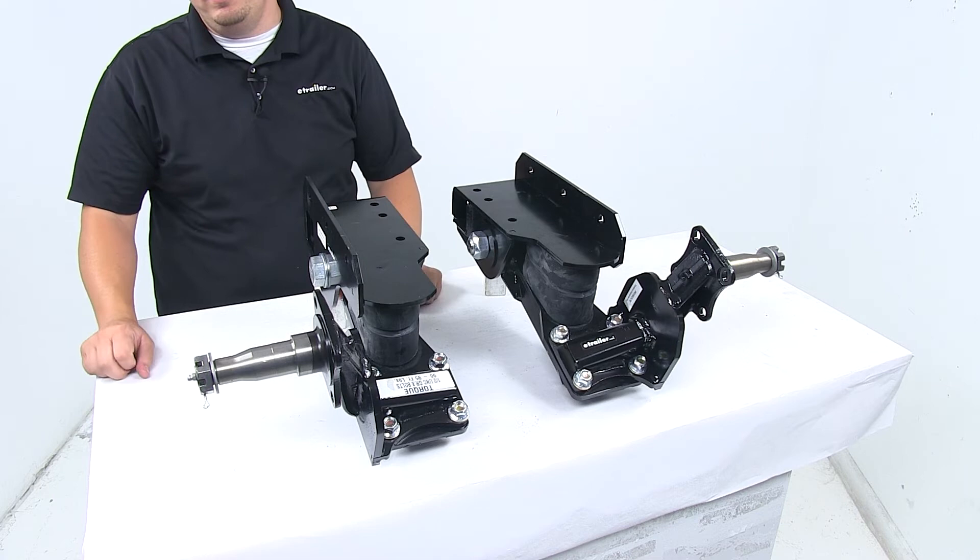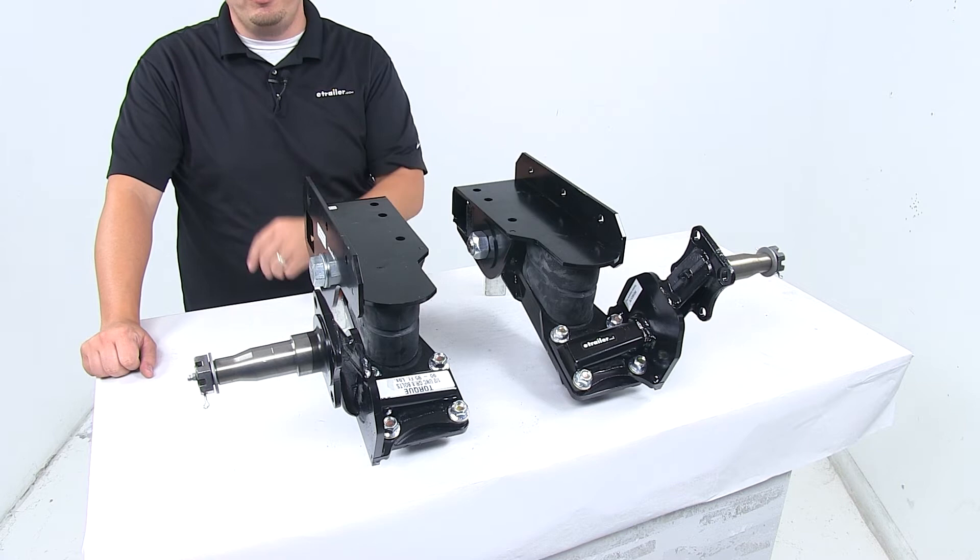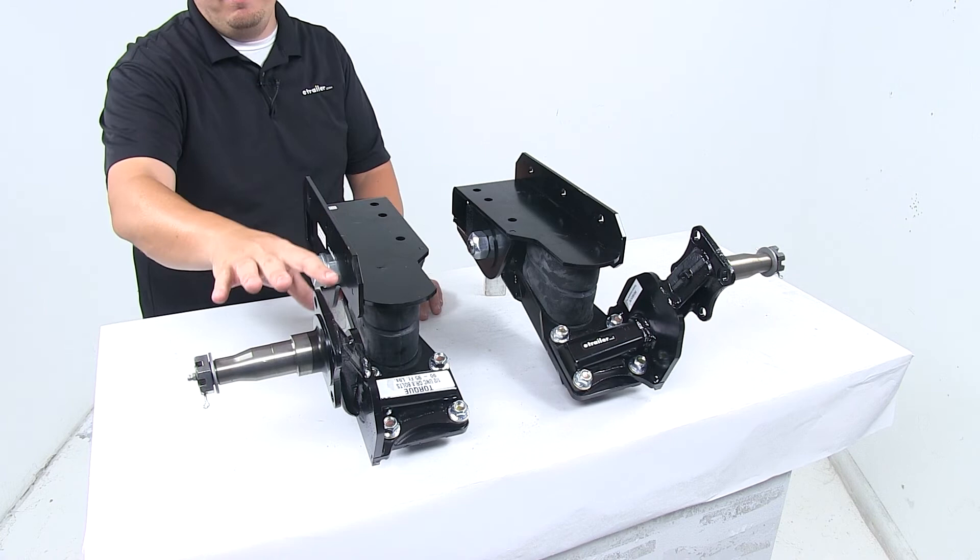And it comes equipped with the 4-inch drop Easy Lube spindles that accept trailer hubs. Hubs are sold separately. The 4-inch drop provides lower ground clearance, and the spindle, like this whole area right here,